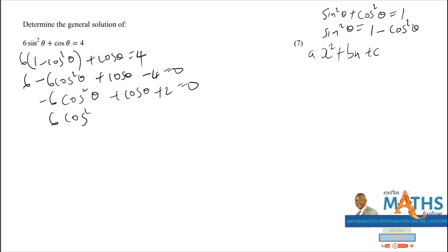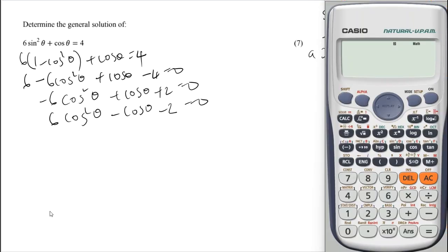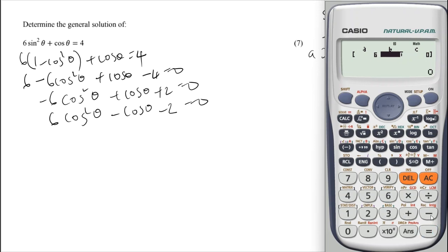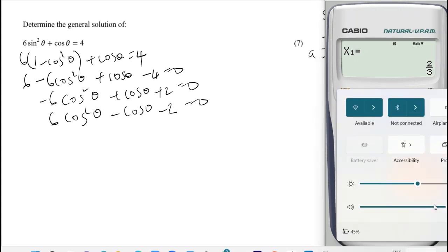Let us divide by the negative sign to get 6cos²θ - cos θ - 2 = 0. Take out your calculator and let us factorize. If you have this type of calculator, you can go to your equation solver, option 6, then your a = 6, b = -1, and c = -2. Press equals and it gives 2/3.